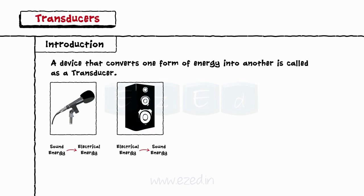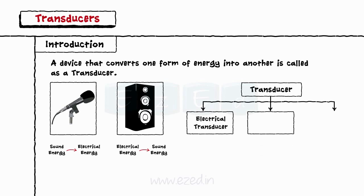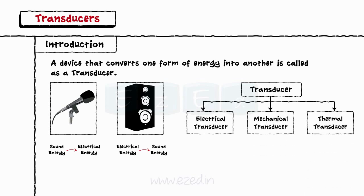Depending on the principle of operation, transducers can be classified into basic types such as electrical transducer, mechanical transducer, thermal transducer, etc.